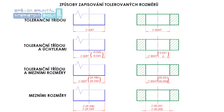Číselnými hodnotami mezních odchylek v milimetrech u rozměrů, které nelze kontrolovat mezními kalibry nebo použití kalibru nepředpokládáme, jako například v kusové výrobě nebo při opravě strojů. Pokud je třeba omezit rozměr pouze v jednom směru, připíše se za tento rozměr údaj maximálně nebo minimálně.